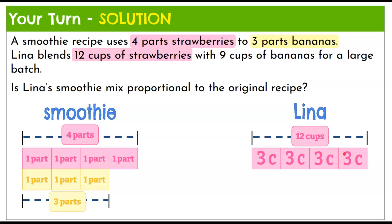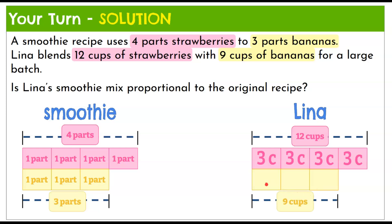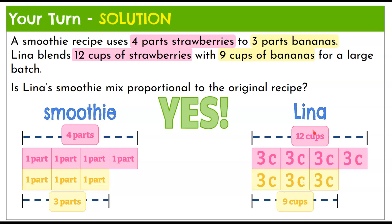Now let's move to bananas. From the original recipe, the nine cups of bananas need to fill three parts. Here are our three part boxes, and we know the total needs to be nine cups — each box needs to be three cups to remain in this relationship. Three, six, nine cups. So yes, Lena's smoothie recipe is proportional to the original.